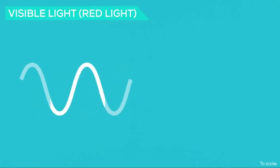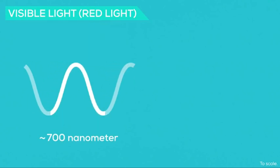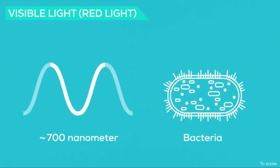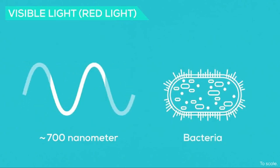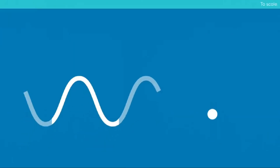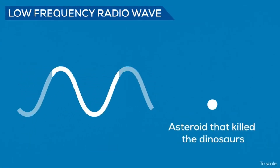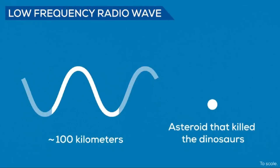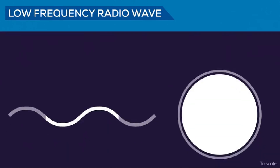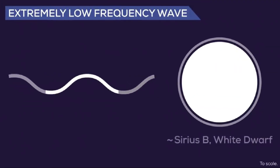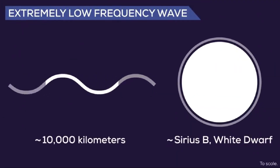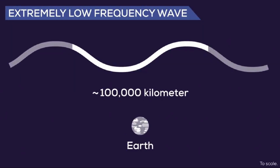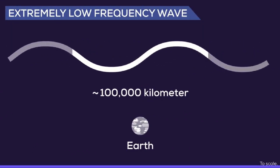Visible light is in the middle of the spectrum, in the range of about 400 nanometers to 700 nanometers — about the size of bacteria. On the other end of the spectrum, radio waves can be up to 100 kilometers in diameter, while the biggest wavelengths we know can span from 10,000 kilometers to a baffling 100,000 kilometers, way larger than Earth.